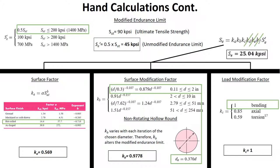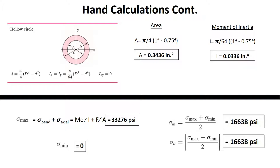Next, through using the dimensions of our tube, we can solve for the area, which is equal to 0.3436 inches squared, and the moment of inertia, which is equal to 0.0336 inches to the fourth. With the area and the moment of inertia, we can solve for our maximum stress, which is equal to bending stress plus the axial stress, and that value is equal to 33,276 psi. Also, our minimum stress is equal to 0. And with our maximum stress value and the minimum stress value, we can further plug those in to solve for our mid-range component stress, as well as the amplitude component stress, and those are equal to 16,638 psi.